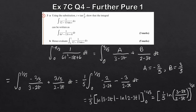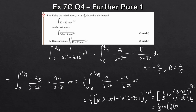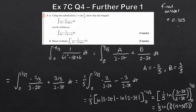Substituting in t = 1/√3 and t = 0 gives the exact answer: (1/5) × ln(2/(9 × (12 + 5√3))). The final numerical answer is approximately 0.305 to three decimal places. That's the final five marks for part b.